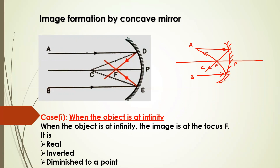So what characteristics can we draw from this? First, when the reflected rays are actually intersecting, we are getting a real image because we have not extended the rays — they are intersecting by themselves. It is a real image, and always remember that a real image is an inverted image. And if you see the image, the two rays are intersecting at one point, so your image is very small — diminished to a point. It is a point-sized image. So the image formed is real, inverted, and diminished to a point, formed at the focus of the mirror.